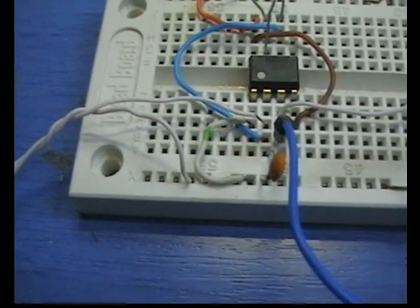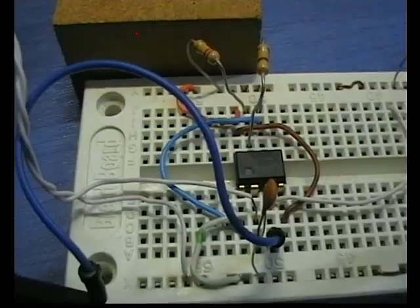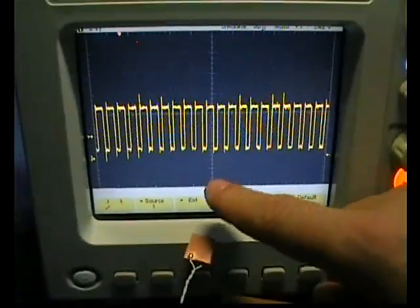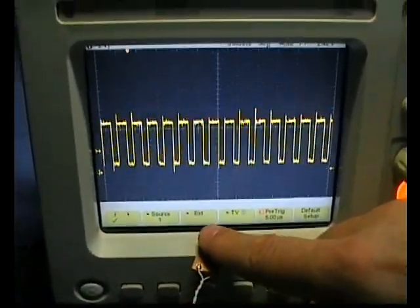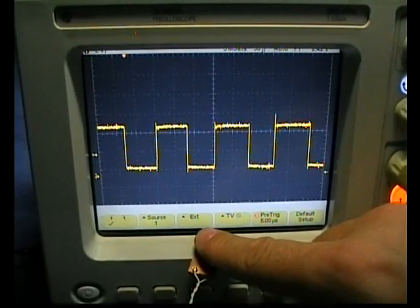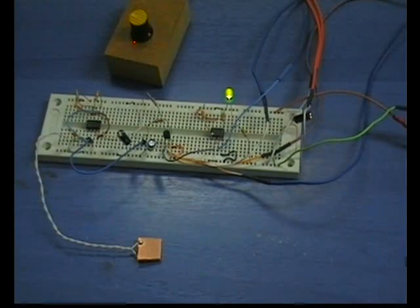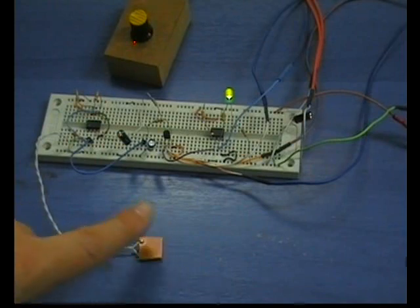The touch electrode is connected parallel to the small capacitor. Look now what happens to the frequency when I touch the electrode. The frequency is radically decreased because of my body capacitance. The circuit is able to detect this change and the output is actuated accordingly.